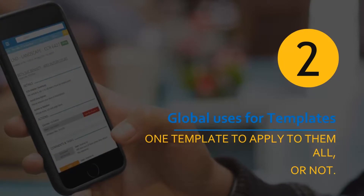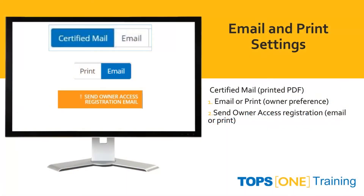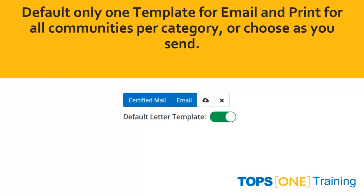Chapter 2: Global Uses for Templates — where one template can apply to all, or not. The certified mail indication means a printed PDF will be created. This coincides with the email or print preferences for owners, which can be determined under the editing of the owner itself. Each line item allows you to default one template for email, print, or both for all communities per category, or choose as you send.